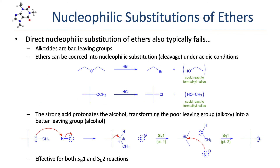The direct nucleophilic substitution of ethers also typically fails. A nucleophilic substitution of an ether would result in an alkoxide acting as the leaving group. And alkoxides are terrible leaving groups, just like hydroxide. Just like we saw with alcohols, ethers can be coerced into nucleophilic substitution under acidic conditions. The reaction is often referred to as ether cleavage.